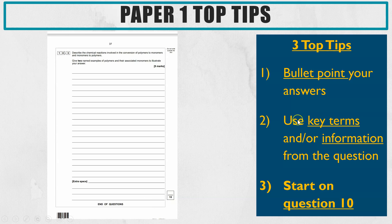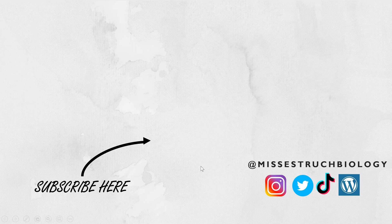So those are my top tips — definitely start on question 10. Once you've answered that, and it should calm your nerves because they're slightly easier questions, then go back to the beginning and start from there. As you go through: bullet points, highlight key terms, make sure you're using key terms, and where relevant use information from the question. That is it — the Paper 1 strategy. Try it out on your mocks, see how it goes, and then definitely use it for your actual exams later on in the year.